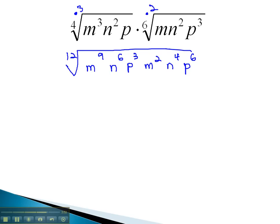Now, we can quickly combine our m's, n's, and p's together by adding the exponents, because the bases are multiplied. Under the 12th root, we have m to the 9 plus 2, or 11, n to the 6 plus 4, or 10, and p to the 3 plus 6, or 9.